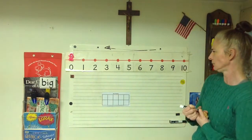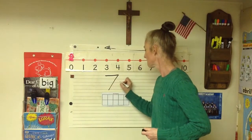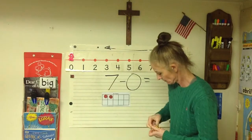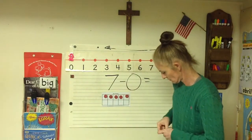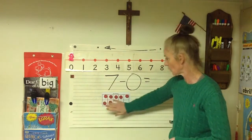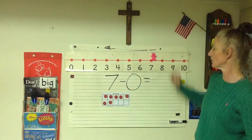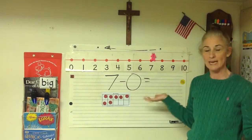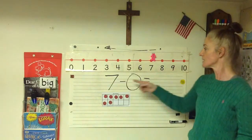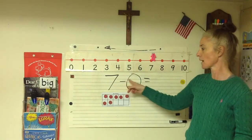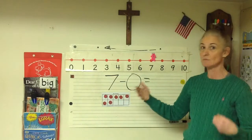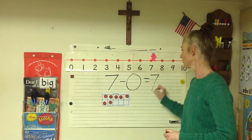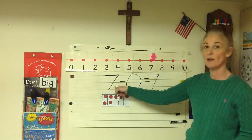This time we're going to do seven minus zero equals. Let me put seven in our ten frame. We have seven; we need to put our figure on seven. We're going to go back zero — we don't have to take any steps at all. We're already where we need to be. Seven minus zero — I'm going back zero, nothing. Am I taking any out? Not at all. So how many do we have? We still have seven. That is another subtraction action no-brainer, because we took nothing away — we're still left with seven.